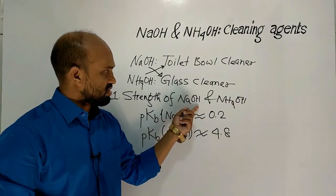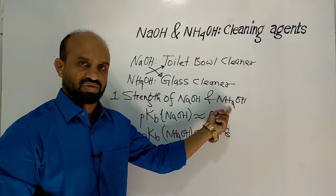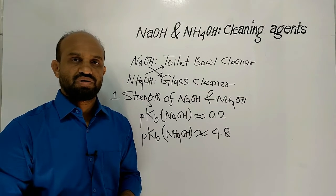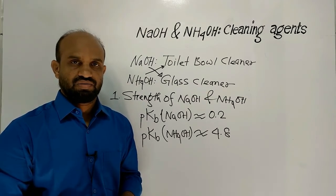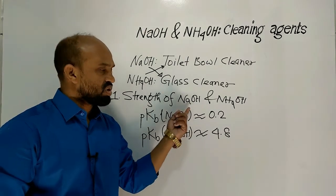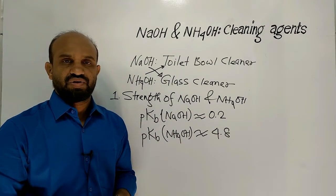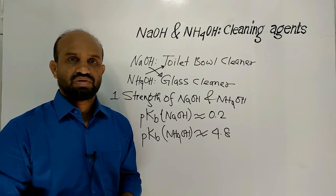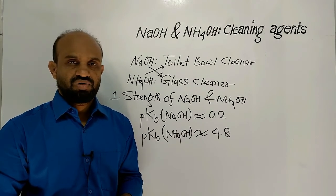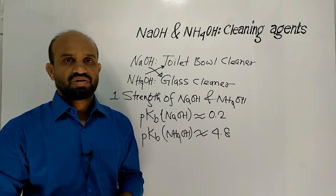Sodium hydroxide is a stronger base than ammonium hydroxide, and the dirt present on the toilet bowl is of high concentration. To remove this high-concentration dirt, a stronger base is needed — that means sodium hydroxide is used. If ammonium hydroxide is used, it cannot function properly because of its weakness. So in toilet bowl cleaner, sodium hydroxide is used, not ammonium hydroxide.